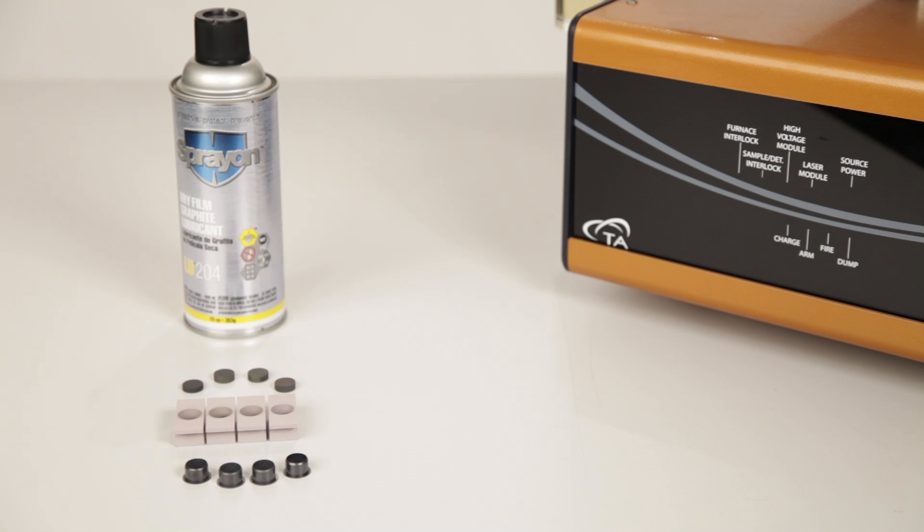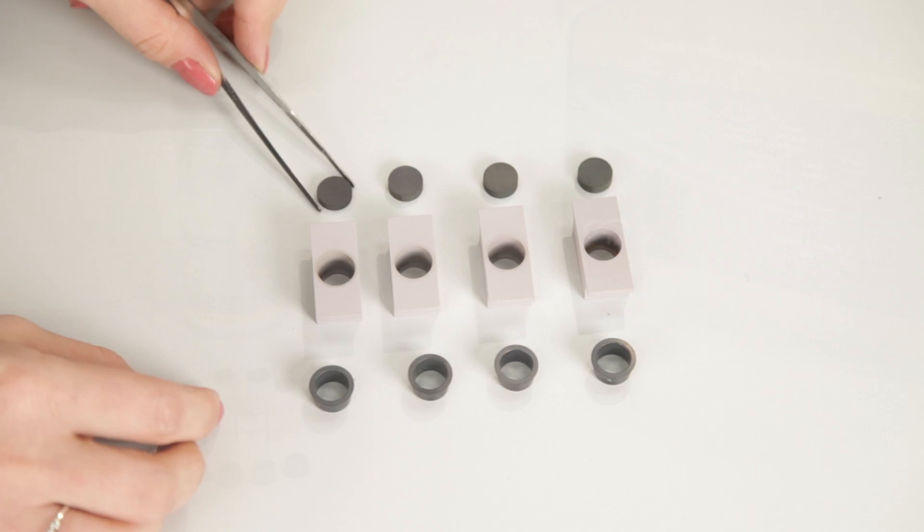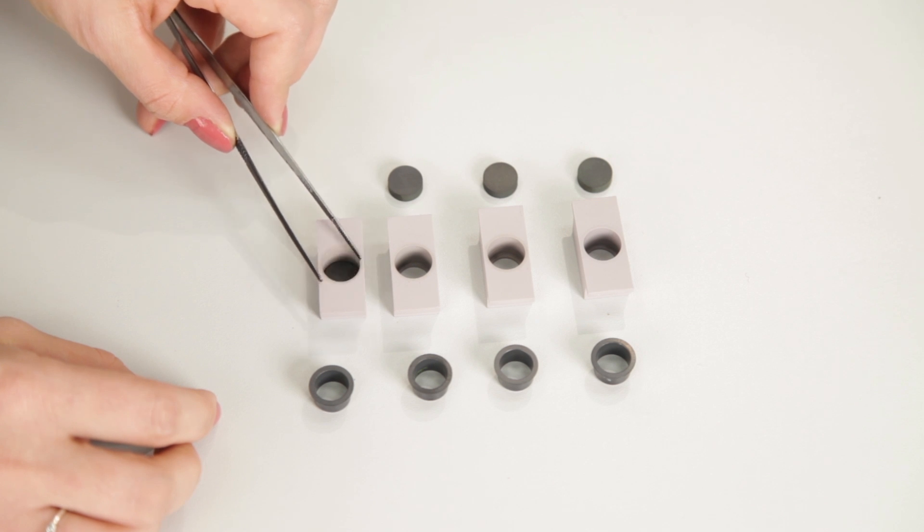After choosing the appropriate reference sample, we graphite coat it together with the unknown samples to make sure they all get a similar thickness of coating.